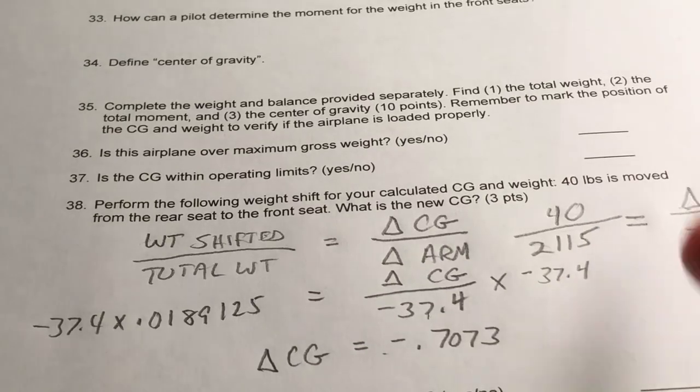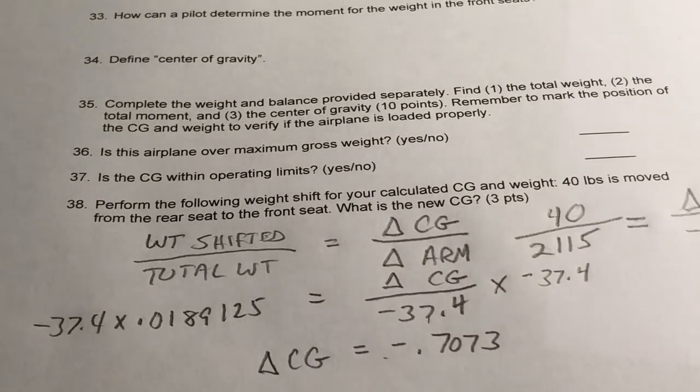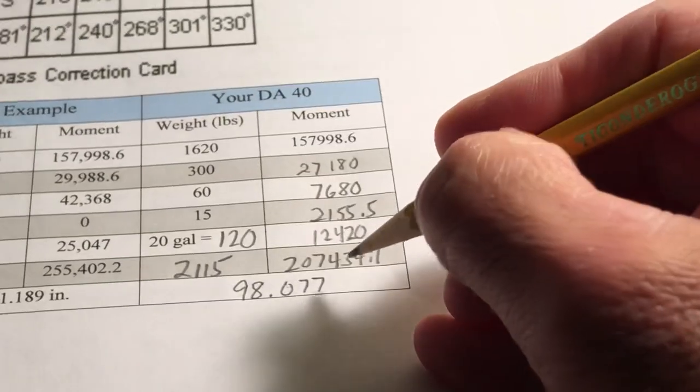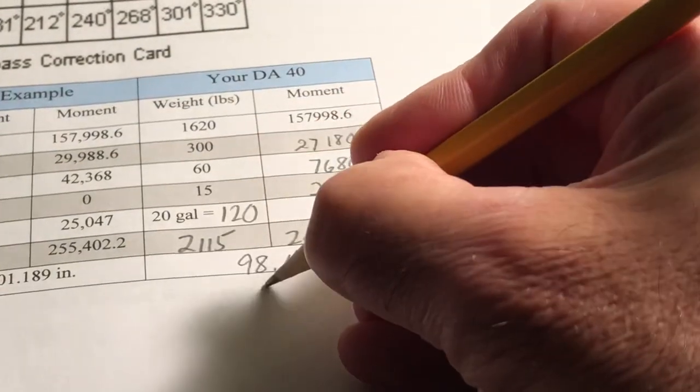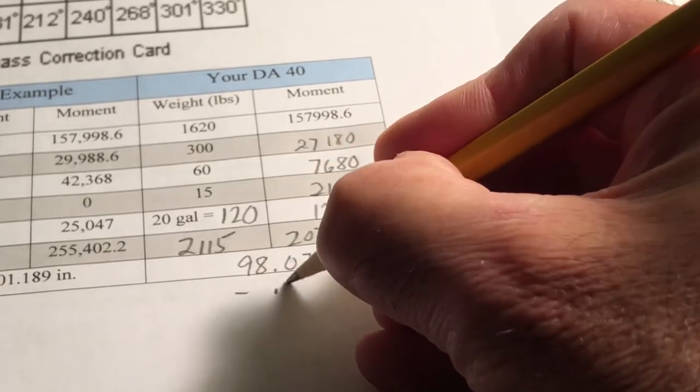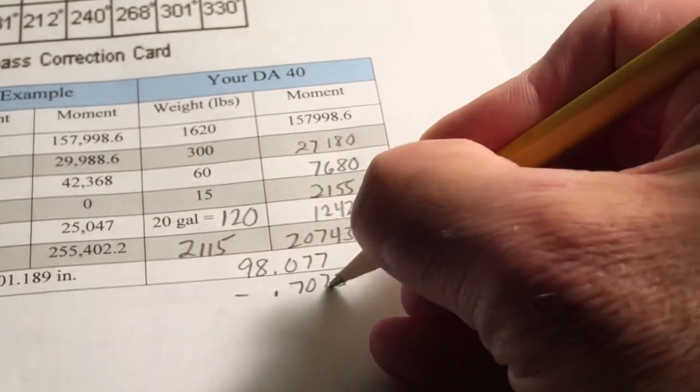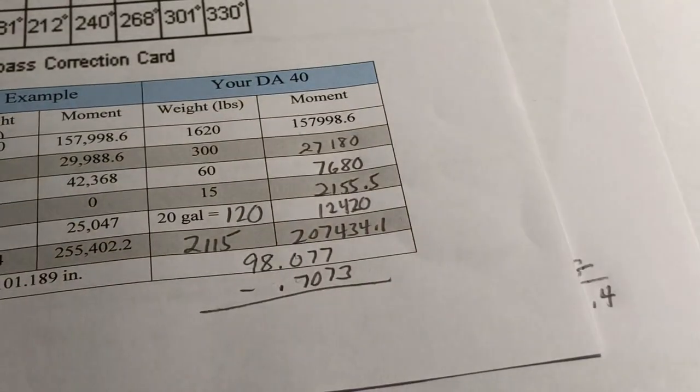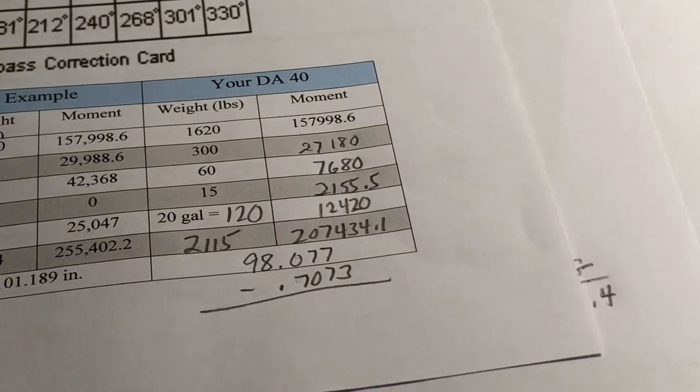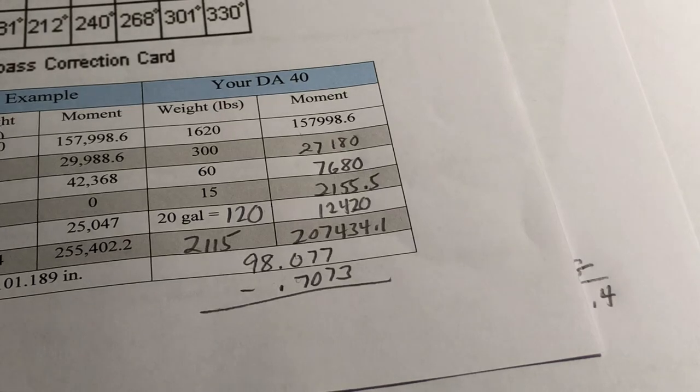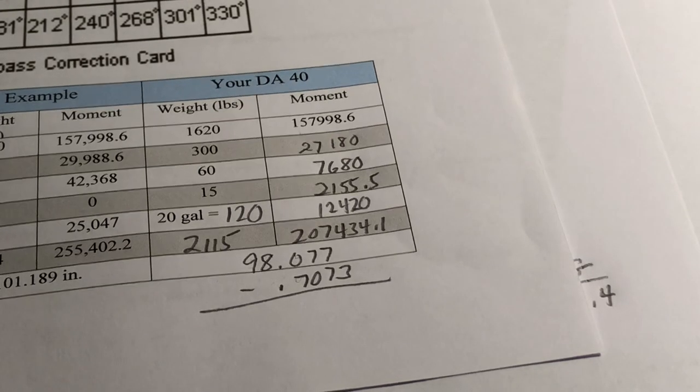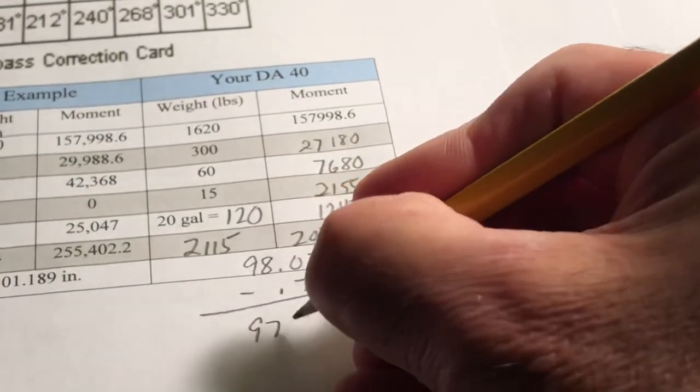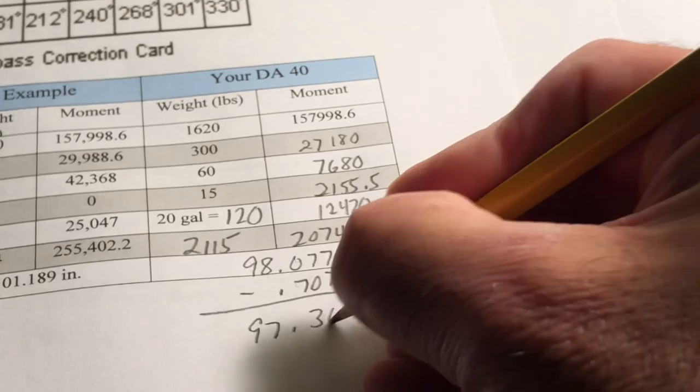Okay, so that will be the change in the center of gravity. So now all we have to do is subtract that from our center of gravity before we did the weight shift to get a new CG. So 98.077 minus 0.7073 is 97.3697.